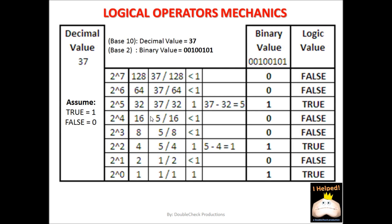Now we're going to start looking at the mechanics of logical operators and get into the numbers. The first thing to assume is that true equals one and false equals zero. Here we have the number 37 listed as a decimal value and below that as its binary equivalent. To convert from decimal to binary, we start high — 2 to the power of 7 equals 128. We take 37 and divide by 128; it comes out to less than 1, so that gives us a binary value of 0, which is a logical value of false. We do the same with 2 to the power of 6, which is 64 — 37 divided by 64 is less than 1, so again binary 0, logical false.